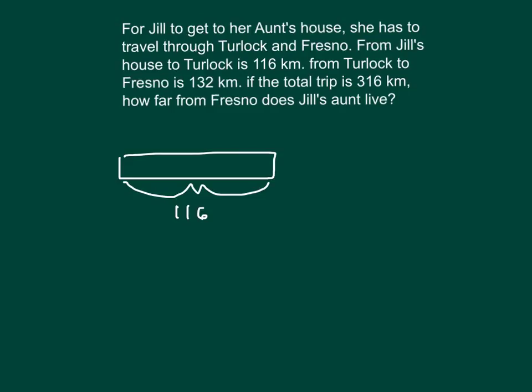Next, once we're at Turlock, then we can continue from Turlock to Fresno. From Turlock to Fresno is 132 kilometers. So now we've gone from Jill's house, let's put a little J there, to Turlock. And then now we've also gone over to Fresno.